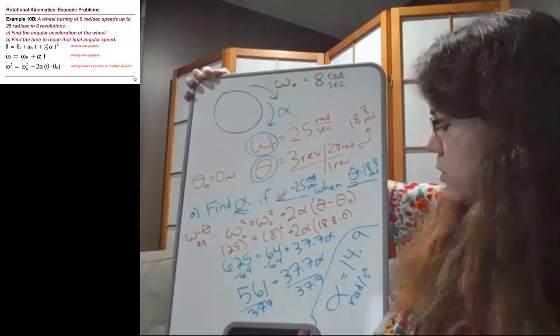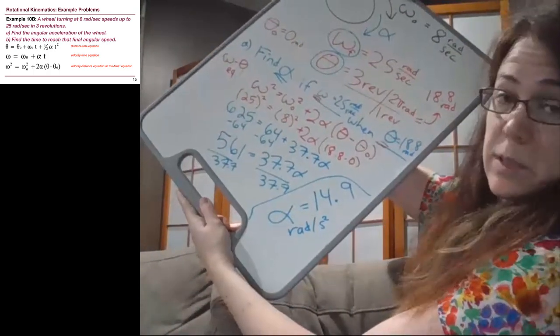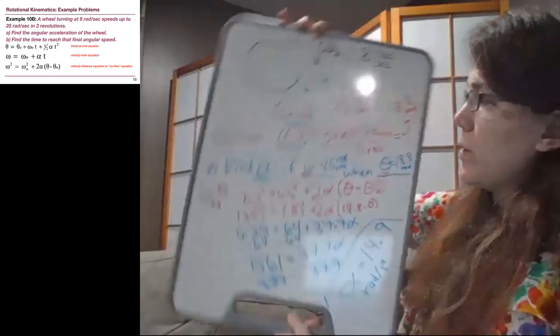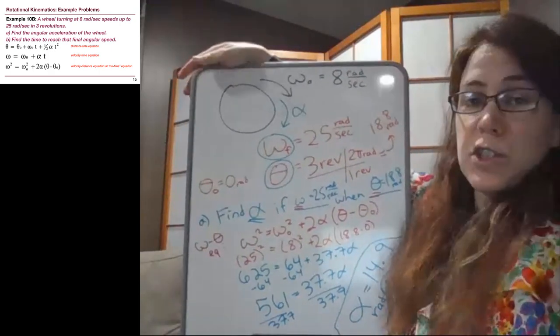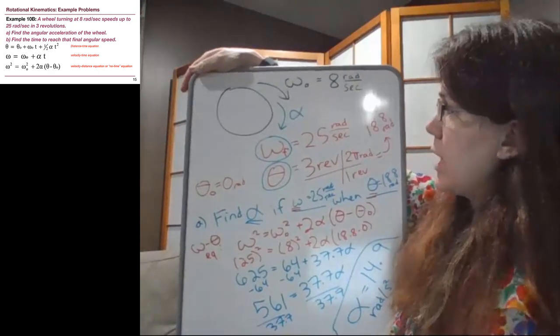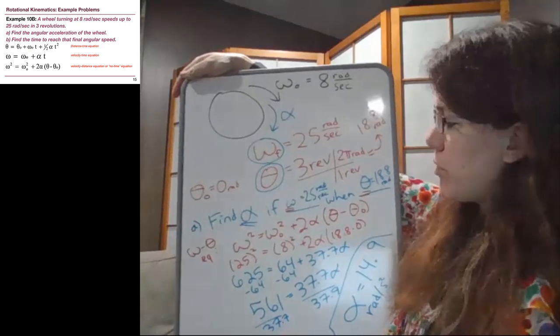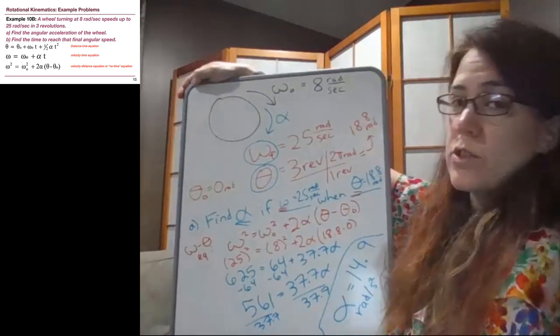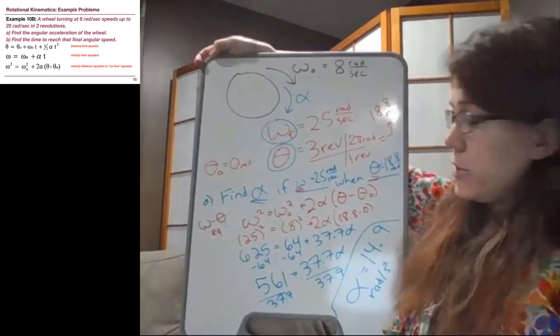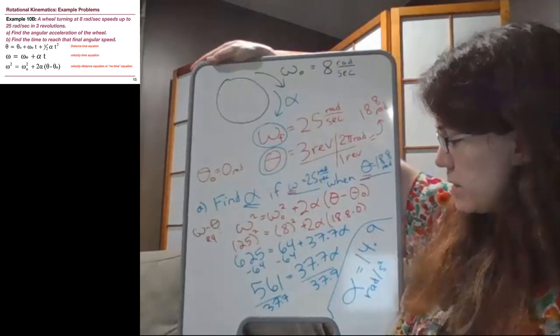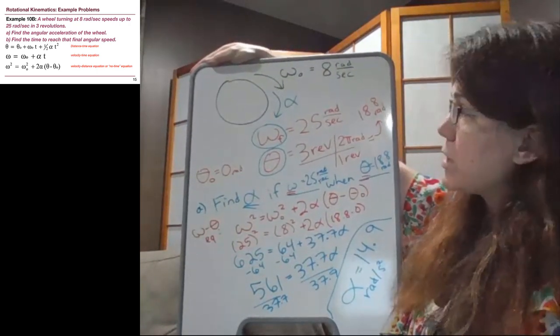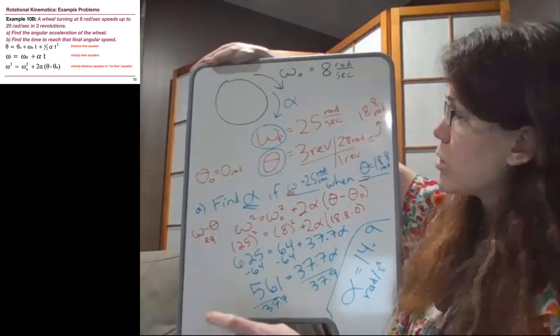So alpha is 14.9 rad/s², and that's part A of the problem. I'm going to erase some of this, so if you need to, pause the video to catch up writing things down.